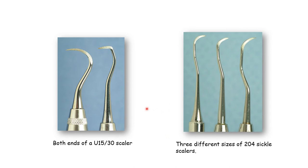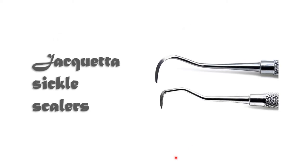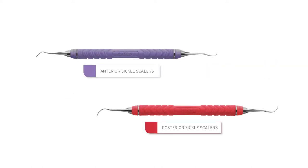Here are pictures of a sickle scaler. This is a U15/30 scaler showing two ends, and these are different sizes of 204 sickle scalers. This is the Jacquette sickle scaler. There are two types of sickle scalers: one is anterior for the anterior teeth and the other is posterior for the posterior teeth.